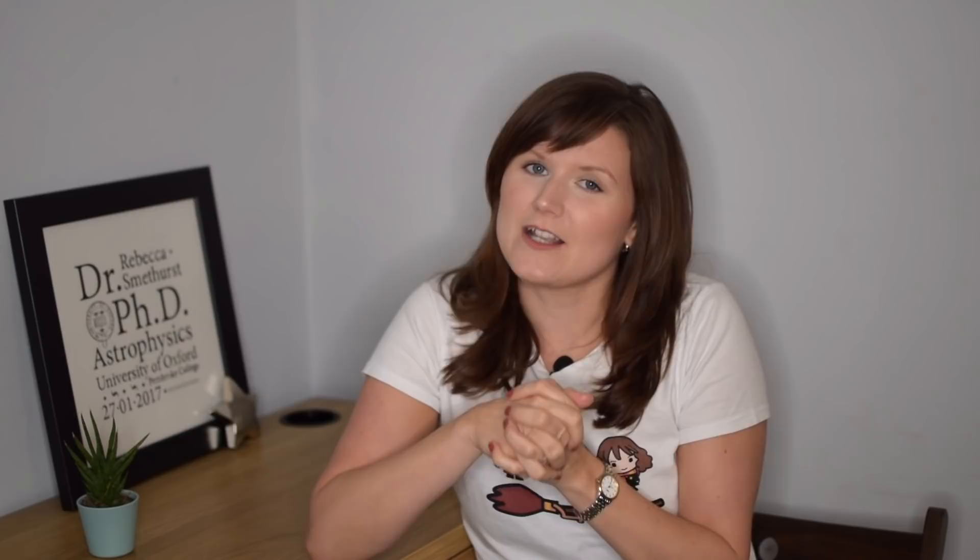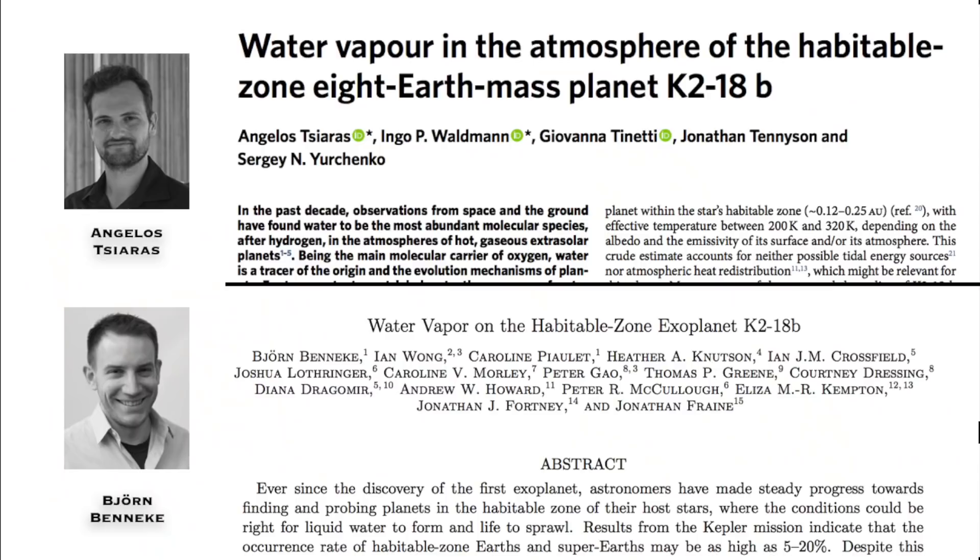Then earlier this year, in June 2019, the number of known exoplanets went over 4,000 for the first time.